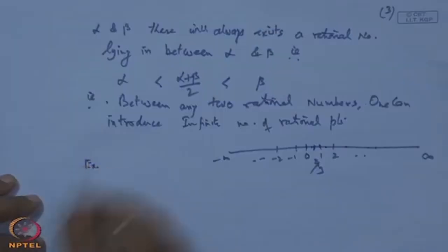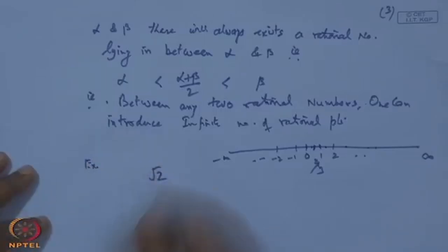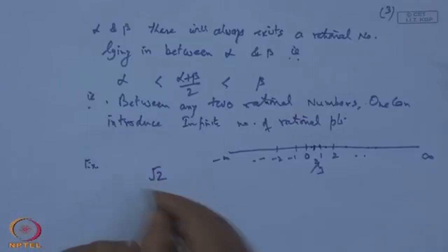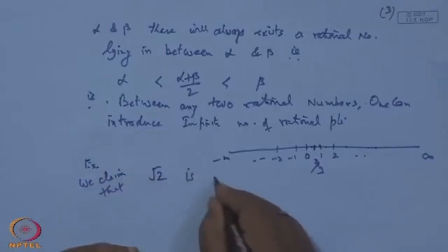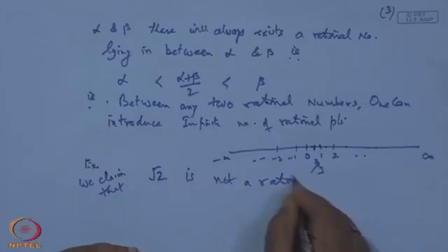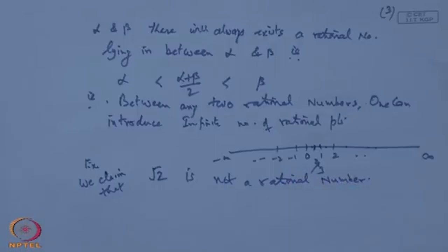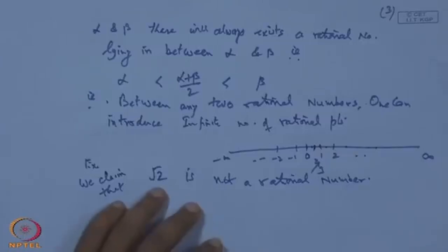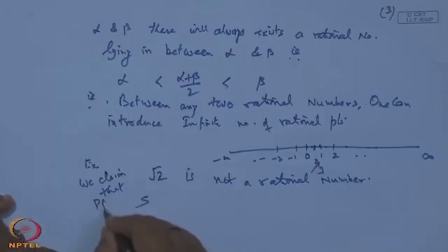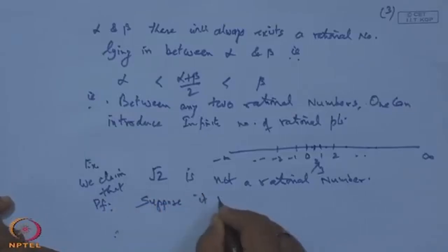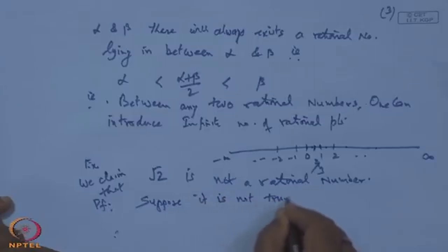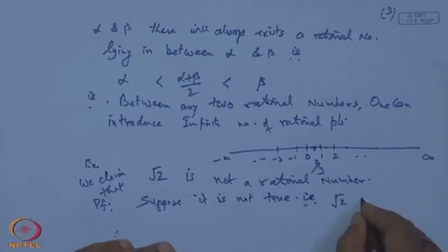For example, if we take √2, we claim that √2 is not a rational number. We will prove this by contradiction. Suppose it is a rational number — then it must lead to a contradiction. Suppose it is not true, meaning √2 can be represented as p/q — a rational point.